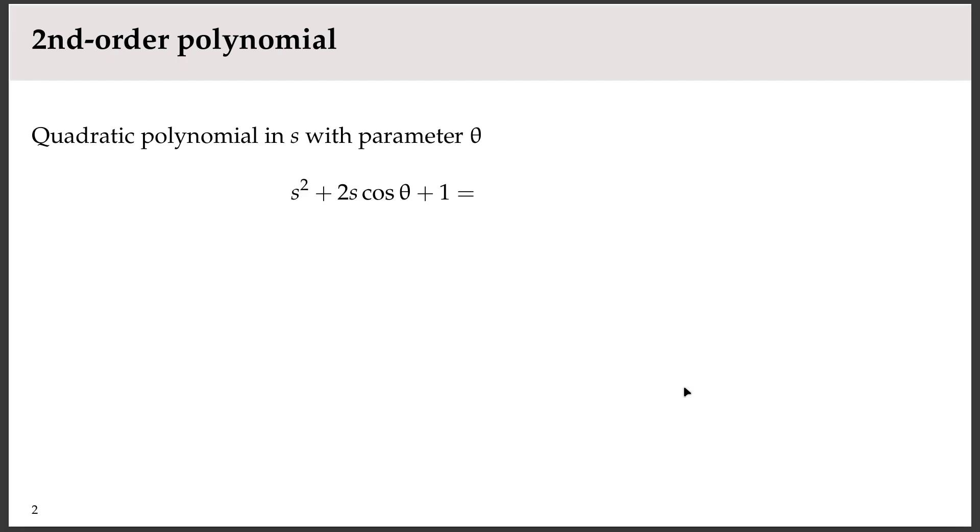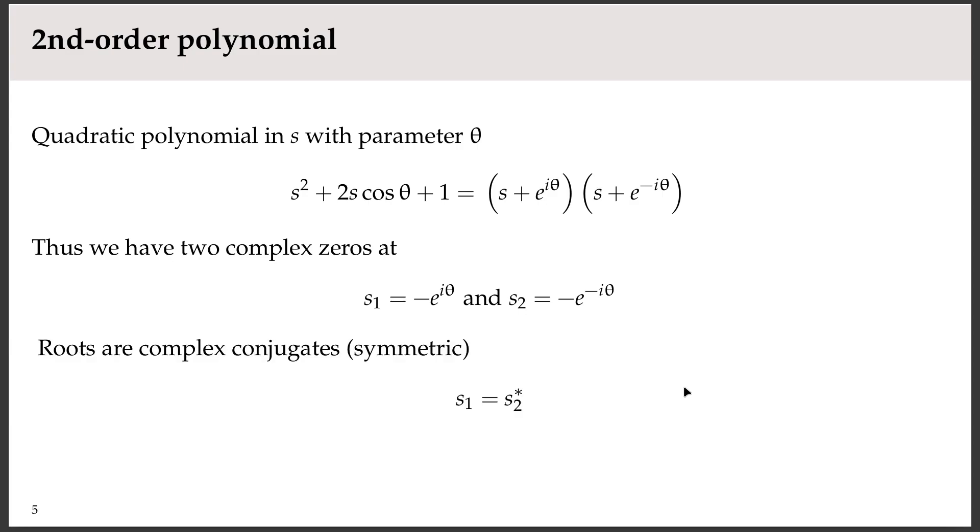And why, you may ask, why on earth would I define the middle coefficient as 2 cos theta? Well, because if I do, the roots of that polynomial are nicely expressed as minus e to the i theta and minus e to the minus i theta. So right away, you see the roots. If I write the polynomial in that way, the roots sit on the unit circle in the complex plane. And more than that, the roots are complex conjugates. So we might say that the roots are symmetric.